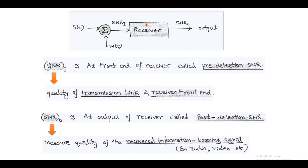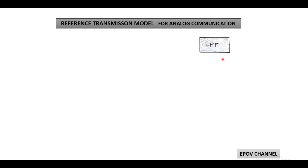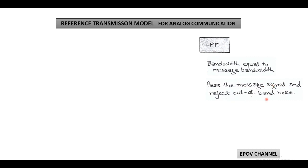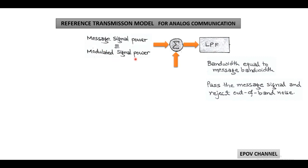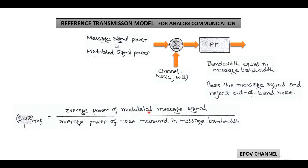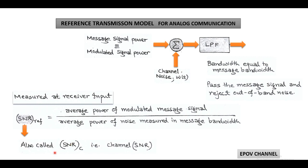After discussing the receiver model and SNR at the input and output side, we are ready to compare noise performance between different analog modulation and demodulation techniques. First we consider a reference model that is applicable for different transmission schemes. This basic transmission model includes a low pass filter having bandwidth equal to the message bandwidth, so that it can pass the message signal and reject the out-of-band noise. The message or modulated signal power is added by channel noise W(t) and then passes through the low pass filter, giving a filtered output corresponding to the information bearing signal. In this reference transmission model, the signal to noise ratio equals the ratio of average power of the modulated message signal to average power of noise measured in the message bandwidth. This reference SNR is measured at the receiver input and is also called the channel signal to noise ratio.